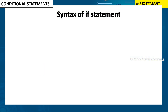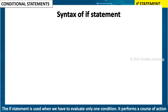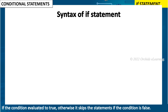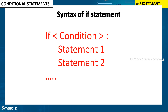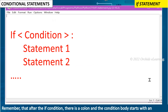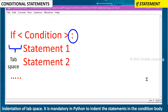The if statement is used when we have to evaluate only one condition. It performs a course of action if the condition evaluates to true; otherwise it skips the statements if the condition is false. Syntax: if condition: statement1, statement2. Remember that after the if condition there is a colon, and the condition body starts with an indentation of tab space. It is mandatory in Python to indent the statements in the condition body.